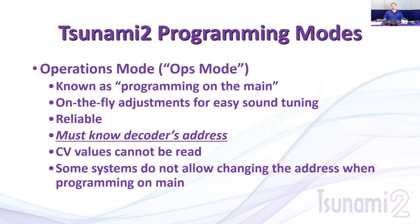When we're doing programming modes, there are two main methods. The first is ops mode, or mainline programming — programming on the main line track. Every command is prefaced with an address, telling that particular decoder to adjust a CV value. It's on the fly, so you can hear instant changes — when I make a volume adjustment, you'll instantly hear the volume change.